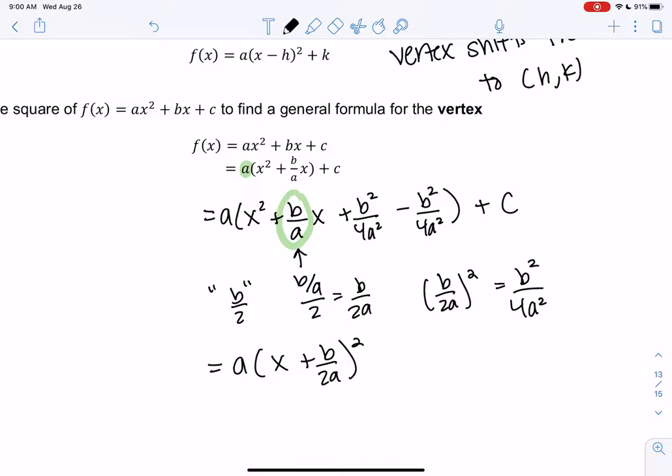So plus b squared over 4a squared. And then if I add it, I have to also subtract it. We can't just add a number. So we're adding it to make a perfect square. So these first three terms are going to make the perfect square. And then we have to just get rid of that. Factor it out. Take it out.